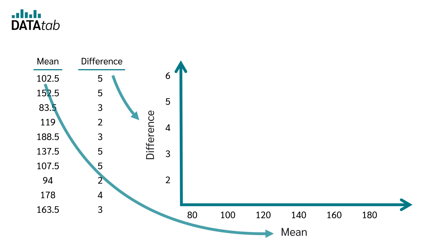Now we can add all the values. We enter the first point with a mean value of 102.5 and a difference of 5. The second point is entered for a mean value of 152.5 and also a difference of 5. We now do this for all other values.